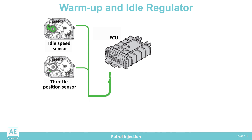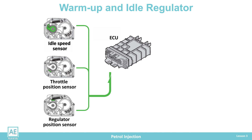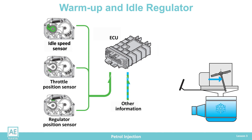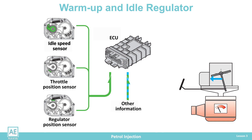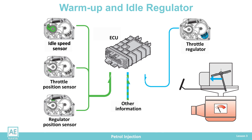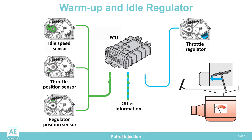For the ECU to start regulation, other information is needed, such as the current position of the regulator and the temperature of the engine — whether it is cold, in the warm-up phase, or warmed up. Only then can the ECU start regulating the throttle position and setting the engine speed to the optimal, required value.